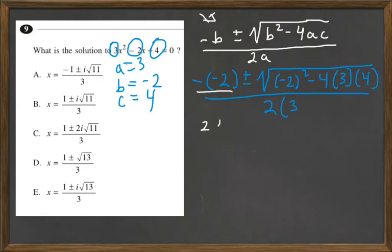And then it's going to be plus or minus the square root of negative 2 squared is 4, and then 4 times 3 is 12, times 4 is 48, so we're going to subtract 48, and then that's all going to be over 2 times 3, which is 6.